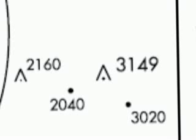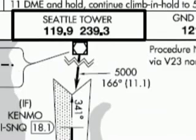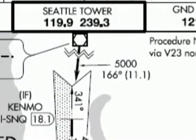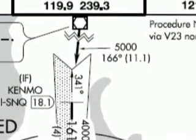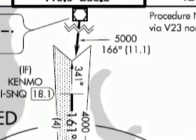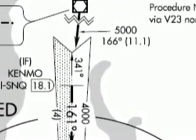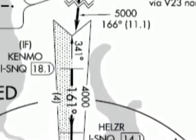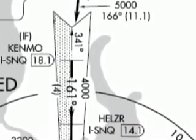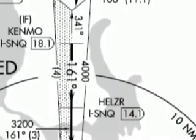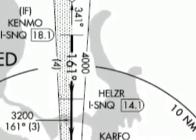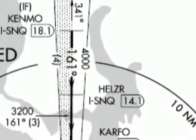The procedure track: this bold line arrow indicates the approach path or procedure track inbound to the airport. It shows a heading value in the center of the arrow. So in this example, a heading of 161 is shown as the procedure track for the approach.